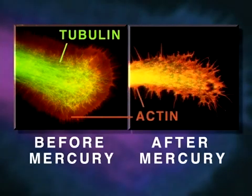Shown here is a neurite growth cone stained specifically for tubulin and actin, before and after mercury exposure. Note that the mercury has caused disintegration of tubulin microtubule structure.